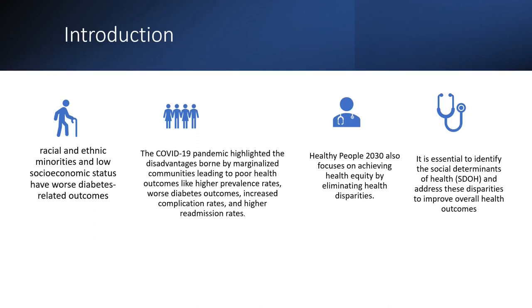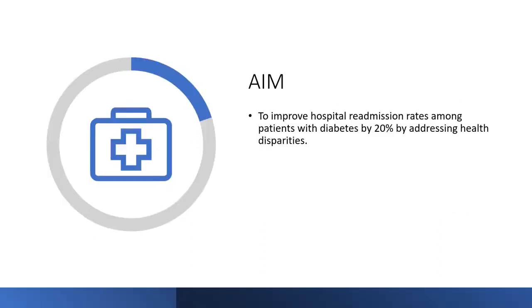The Healthy People 2030 also focuses on achieving health equity by eliminating these health disparities. Therefore, it is very essential for clinicians to identify the social determinants of health and address these disparities in order to improve health outcomes. The aim of our QI project is to improve hospital readmission rates by 20% by addressing health disparity.